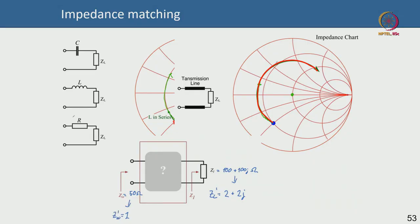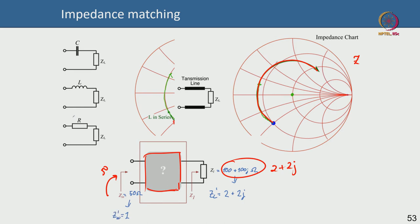So to the whiteboard. You can see this is a Smith chart — a classical impedance-based Smith chart; I am not showing the admittance here. Suppose I have a load of 100 + 100j ohm, which you normalize to 2 + 2j. Now you want to match it such that looking from the input side I should see 50 ohm. So I need to put an impedance matching network — what do I do? First of all we need to find out where 2 + 2j is on the Smith chart.